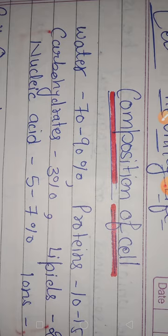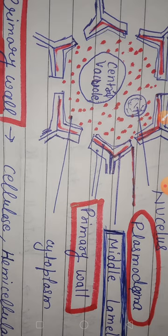10-15%. Carbohydrate 3%, lipid 2%, nucleic acid 5-7%, ion 2%. Structure of cells: centriole present in centrosome, and other organelles present in